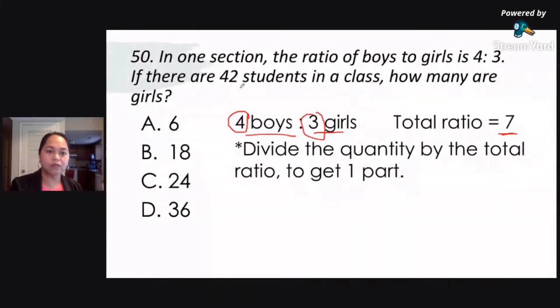Now, yung mangyayari, i-divide natin yung total quantity by the total ratio to get each part. Okay, your total quantity here is 42. We are going to divide that by our total ratio of 7 para makuha natin yung kada part. Okay, so we divide 42 by 7 which give us 6.